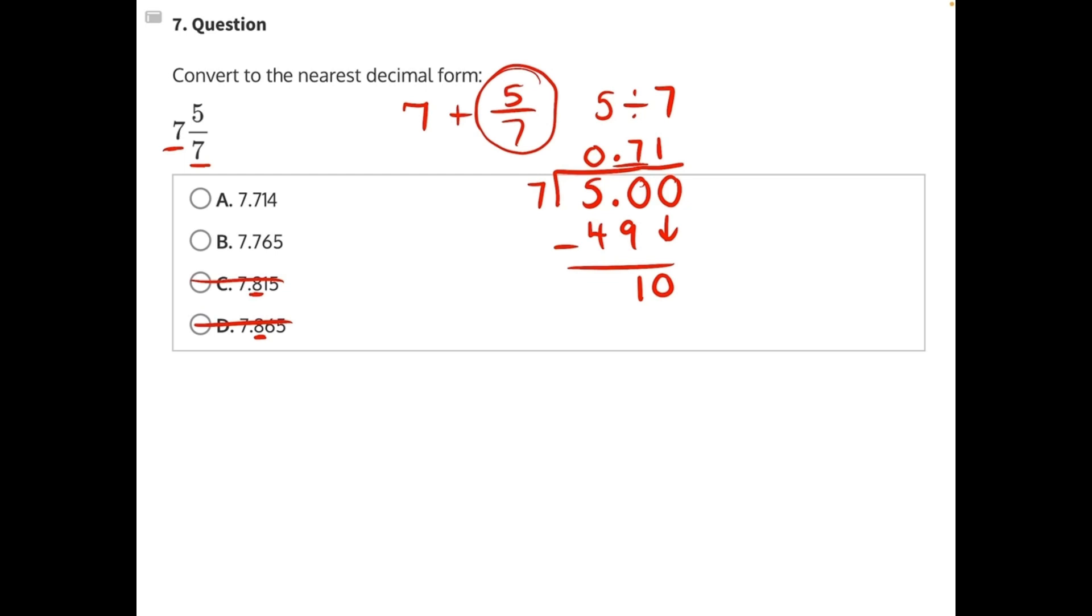And then we can see that our tenths place, or our hundredths place, excuse me, should be the number 1, not the number 6. So we can eliminate answer choice B. And by process of elimination, we can see that A is our correct answer.